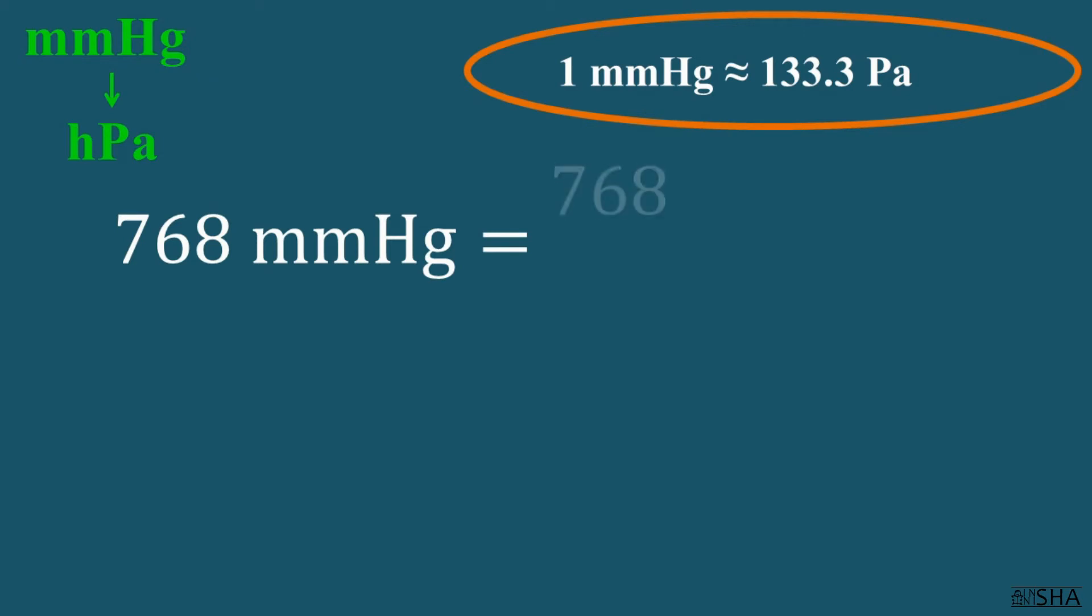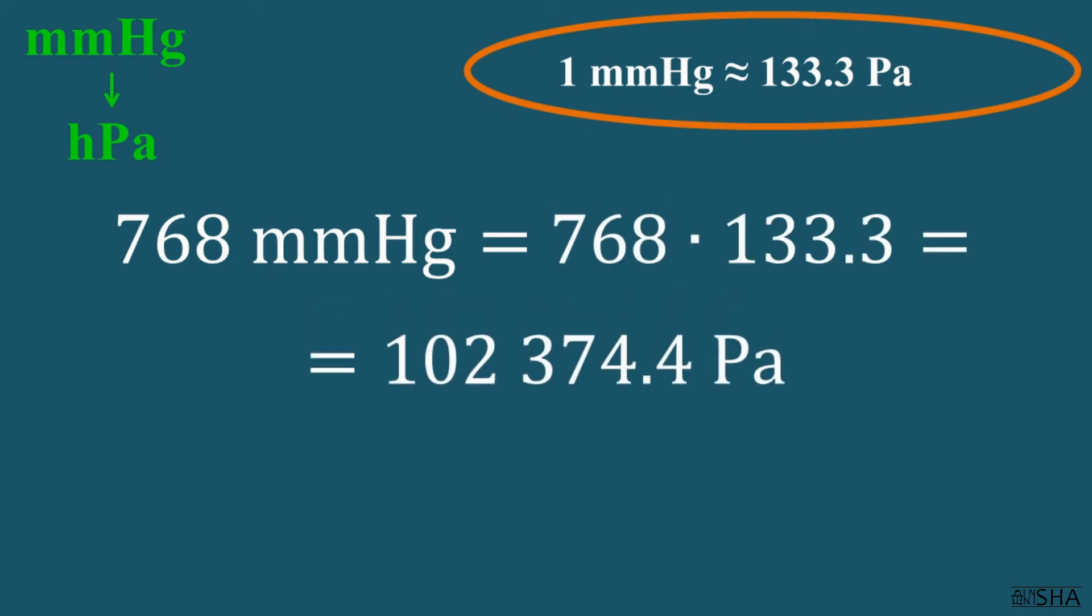768 multiply by 133.3. We get 102,374.4 pascals.